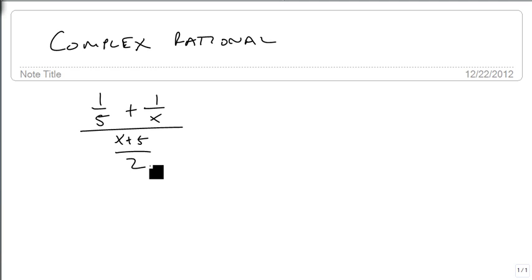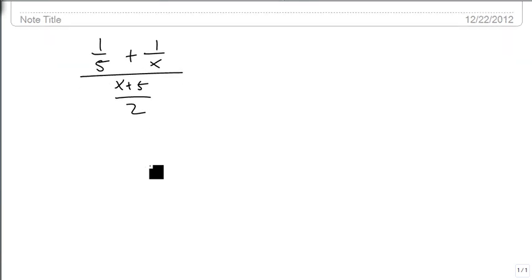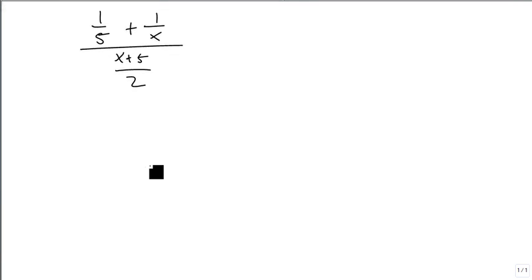We're going to use a method which the book calls method 1, but we're going to call a more straightforward method. The way we're going to do this is we're going to do the numerator first, simplify it, then we'll do the denominator, and then we'll combine our results using a division.